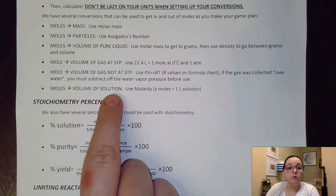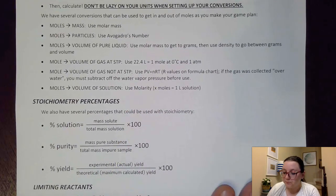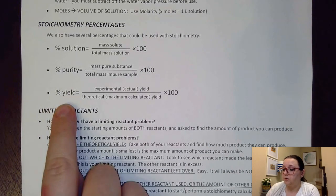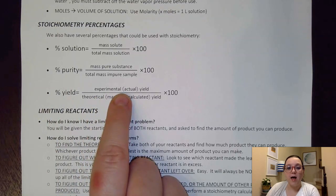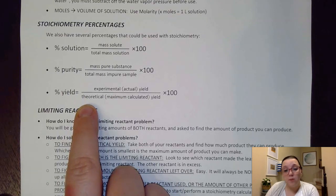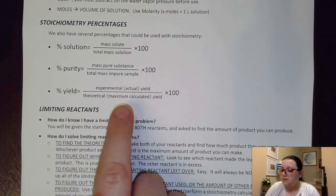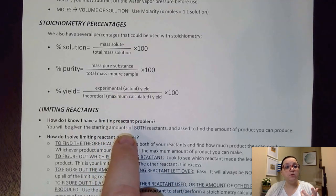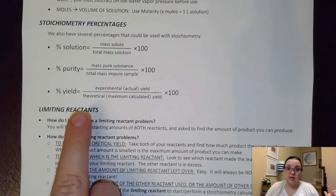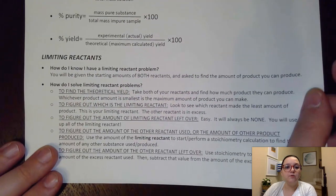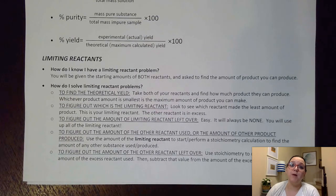If we have moles and volume of a solution, then we can use molarity as a conversion factor. We also have several different types of percentages we can calculate with stoichiometry problems. The one we see most often is the percent yield calculation, where we have our experimental actual value over the theoretical yield — the theoretical being what we calculate from stoichiometry as the maximum amount we should be able to make — multiplied by 100. We also have some tidbits about limiting reactant problems, but we're going to talk about those as we do our first problem. So let's go ahead and turn the page.